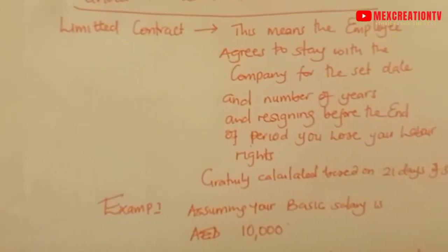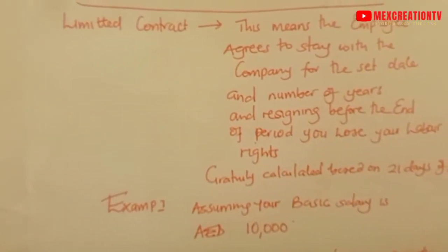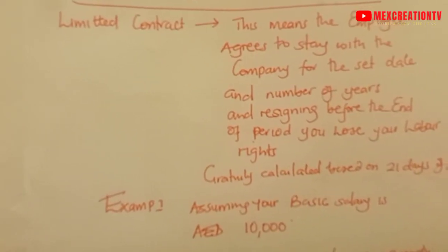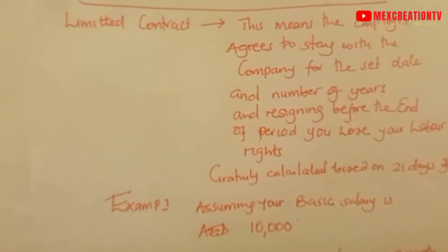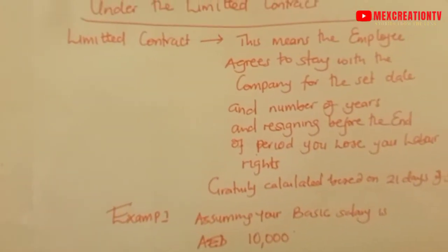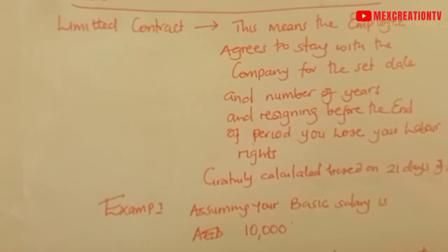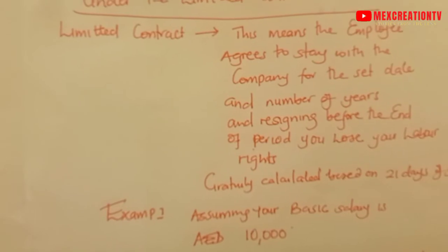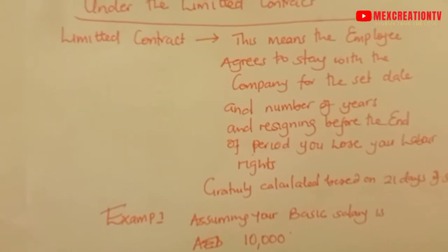A limited contract means that the employee agrees to stay with the company for a set date and number of years. If you resign before the end of this period, you lose your labor rights. For example, if you sign for two years and you resign before completing those two years, that means you lose your labor rights — you may not be compensated or even given your gratuity as the government mandates.